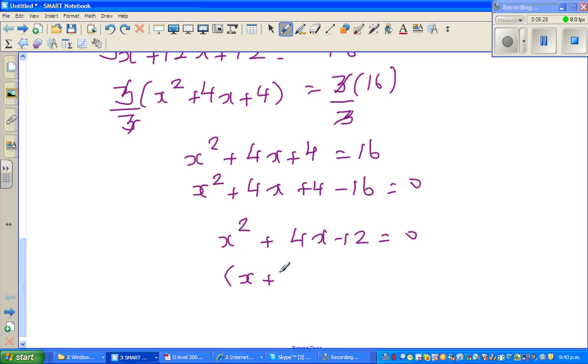This should be (x + 6) times (x - 2) is equal to 0. Therefore, now solving this, so you can say x, this has to be -6 to make it 0, or x is equal to 2. So you've got two answers.